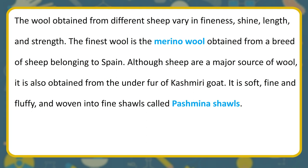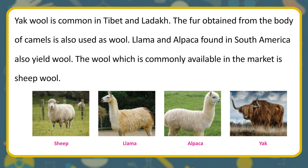The finest wool is the merino wool obtained from a breed of sheep belonging to Spain. Although sheep are a major source of wool, it is also obtained from the under fur of Kashmiri goat — it is soft, fine, and fluffy, and woven into fine shawls called Pashmina shawls. Yak wool is common in Tibet and Ladakh. The fur obtained from camels is also used as wool. Llama and alpaca found in South America also yield wool.